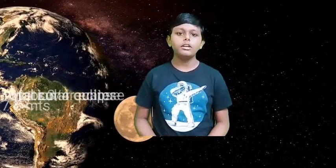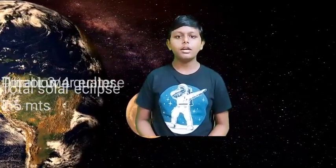The duration of a lunar eclipse is one hour to three quarters, whereas the duration of a total solar eclipse is seven and a half minutes.